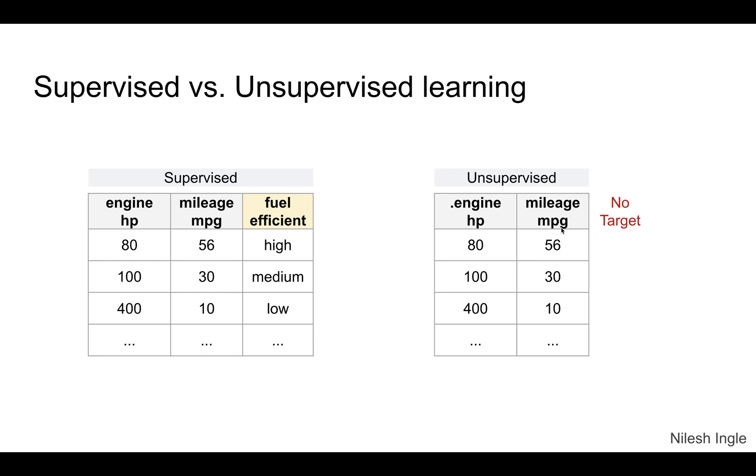In case of unsupervised learning, we do not have the target. So the data would simply be engine horsepower and miles per gallon. The task that we are going to look at in this video pertains to finding groups. If we try to plot this data on a two-dimensional plot with maybe engine horsepower on x-axis and miles per gallon on the y-axis, we may be able to see three different groups of points clustered together.